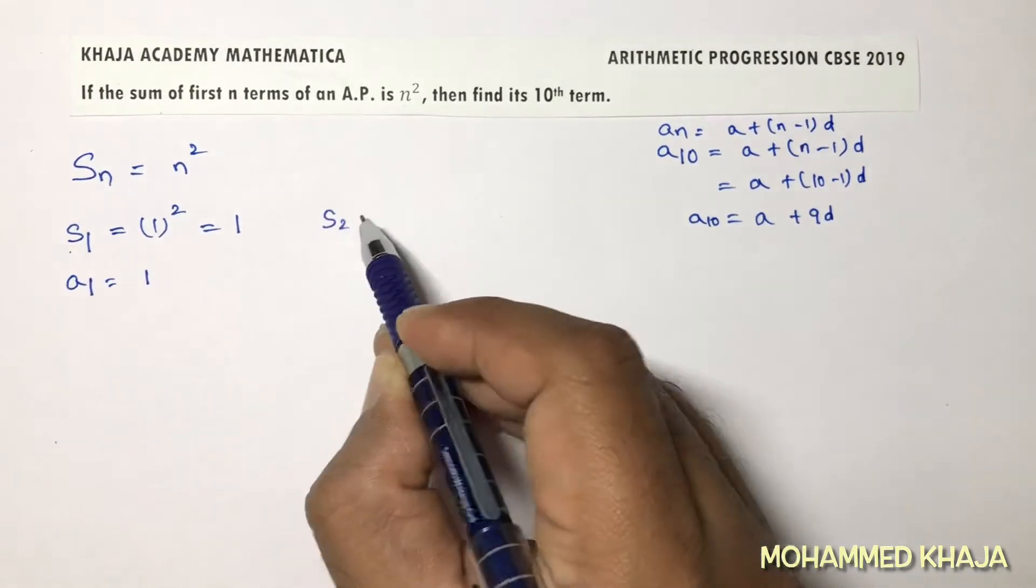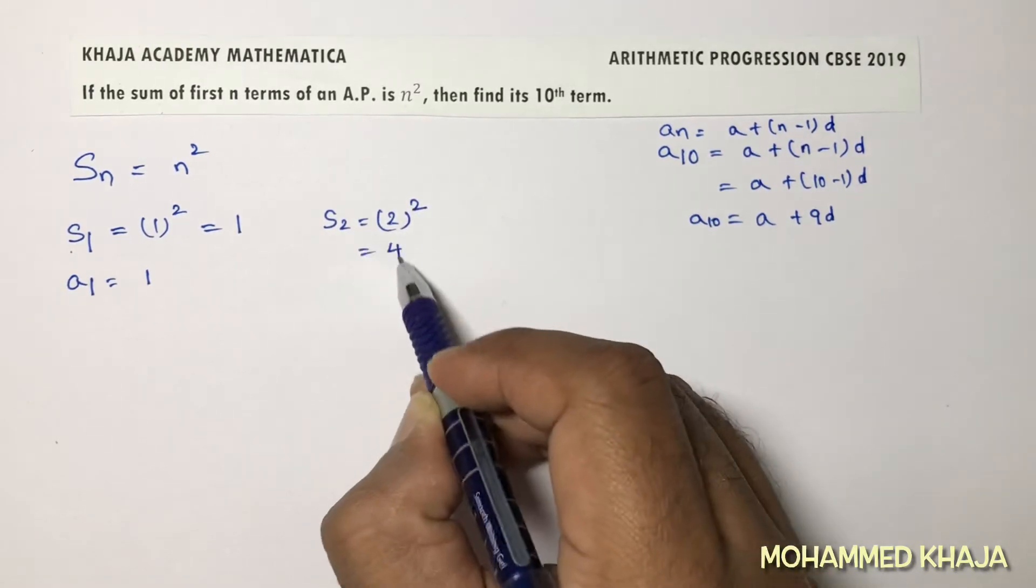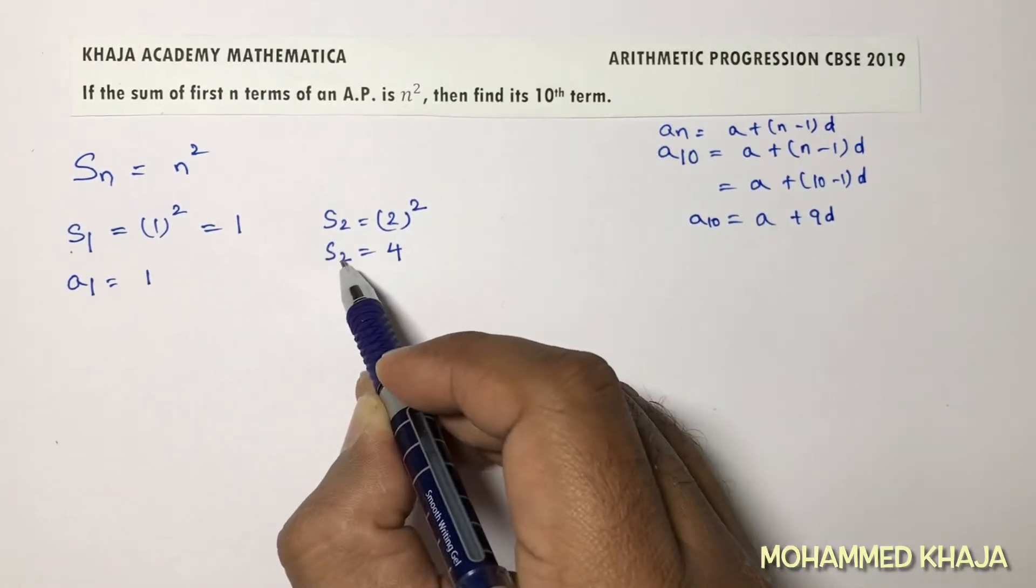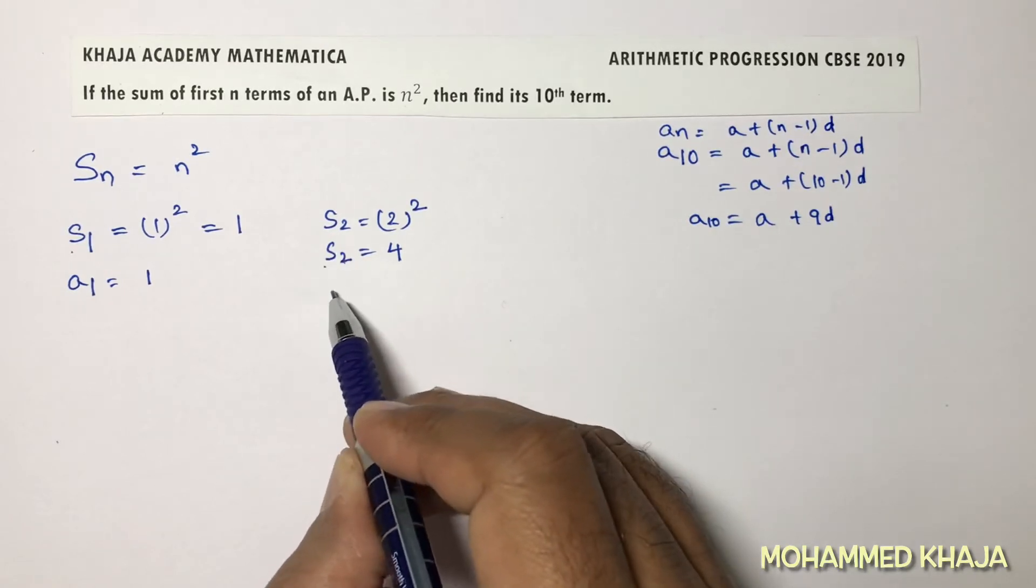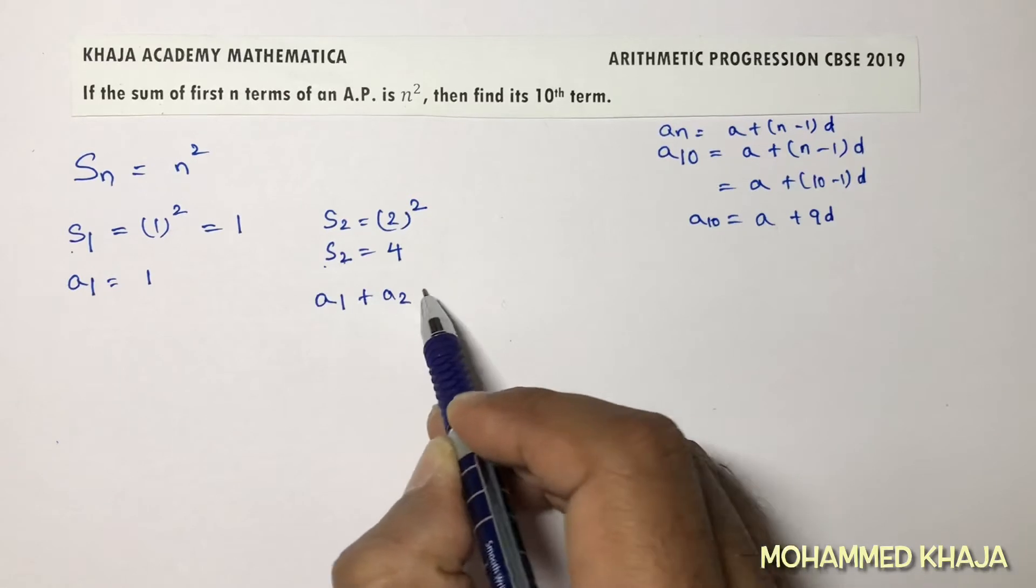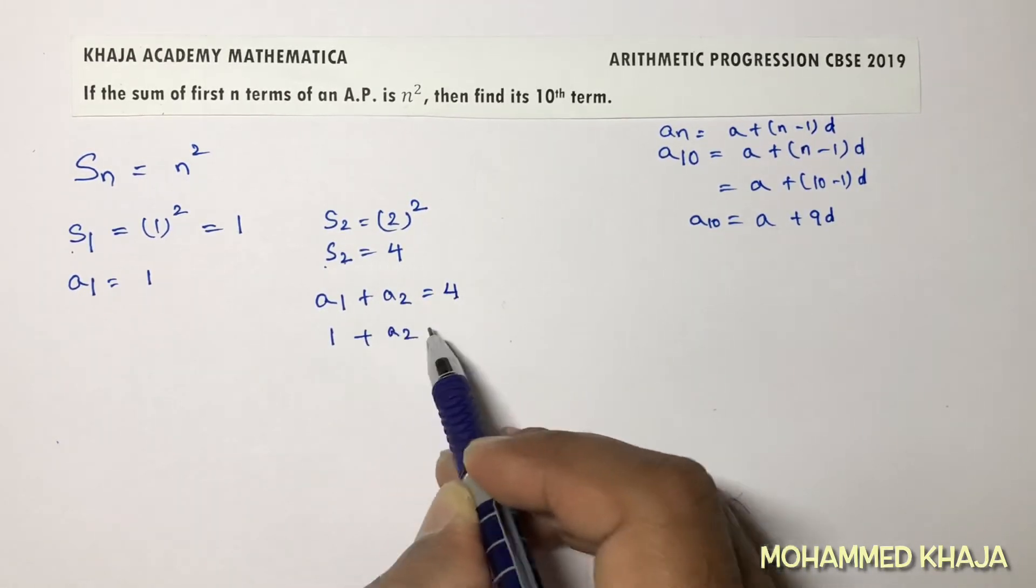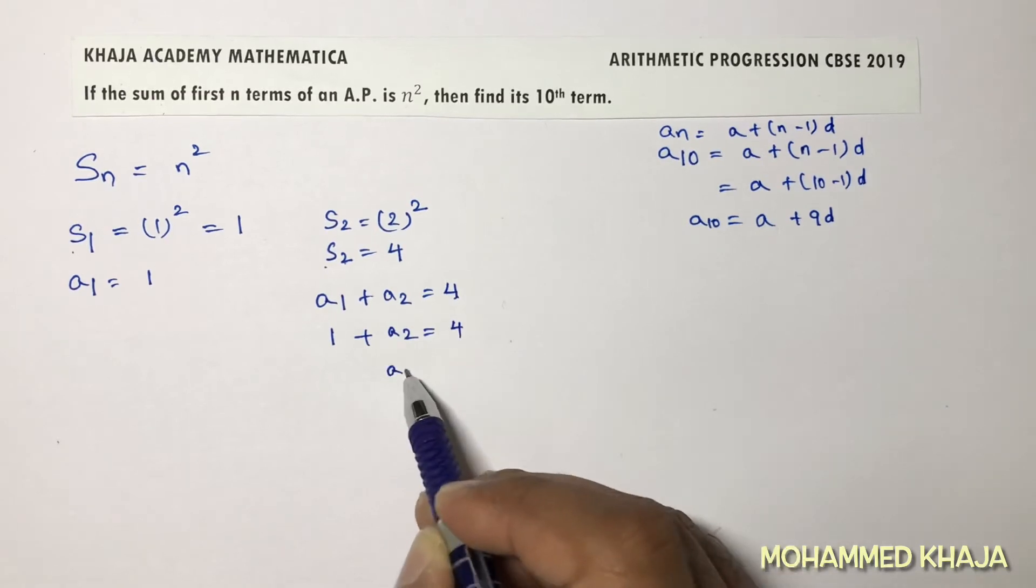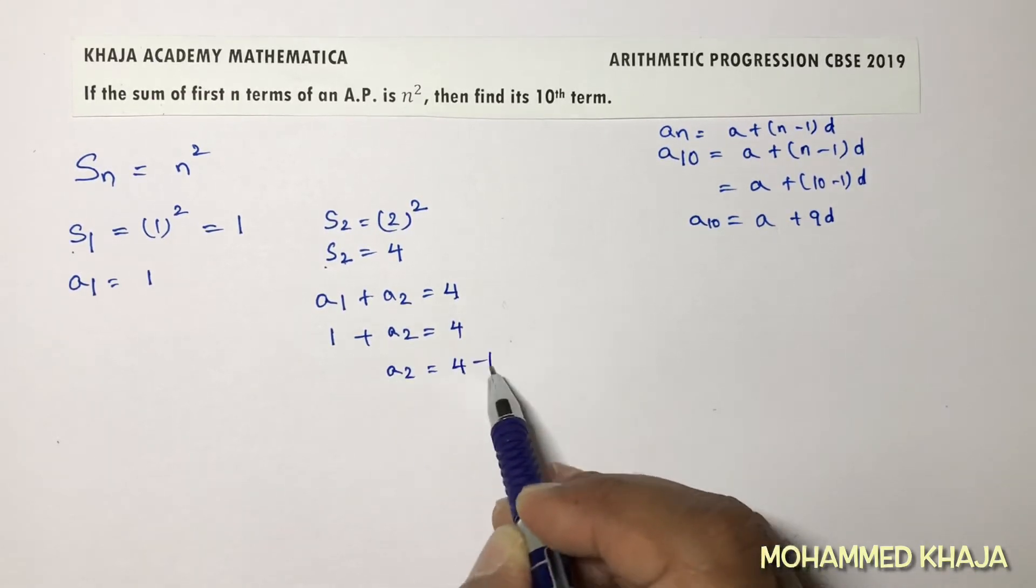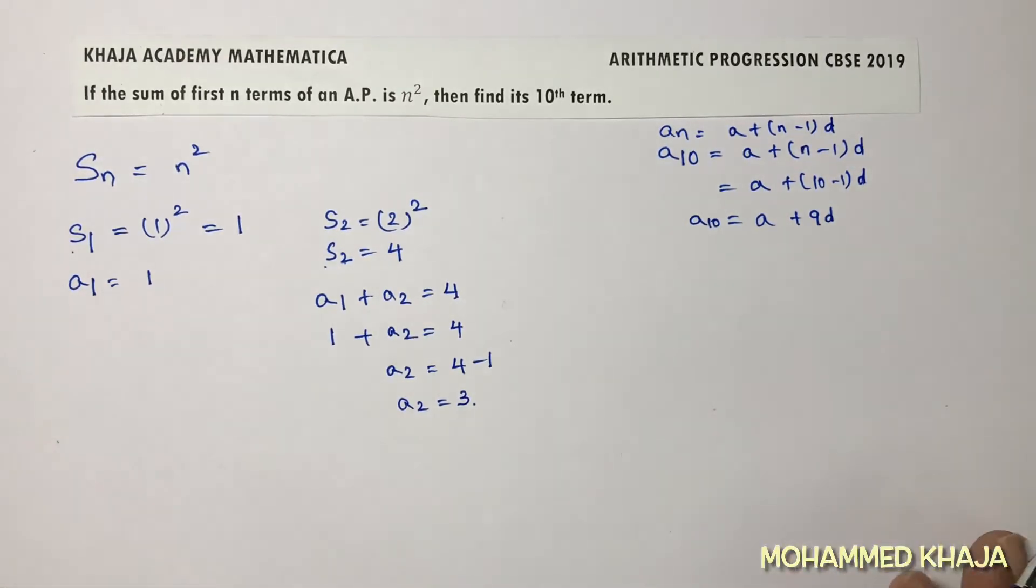Then calculate S₂. S₂ is 2 square, so 2 square is 4. S₂ is the sum of first two terms. So here I will write a₁ plus a₂ equals 4. A₁ is 1, so 1 plus a₂ is 4. So a₂ is 4 minus 1. A₂ is 3.